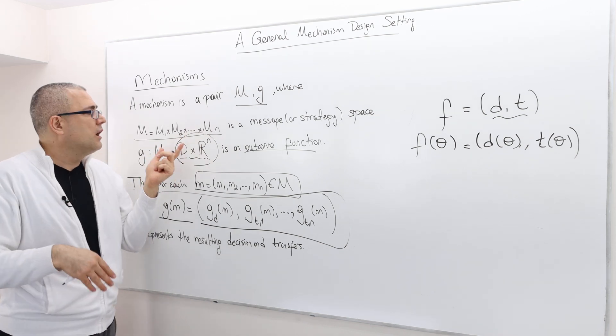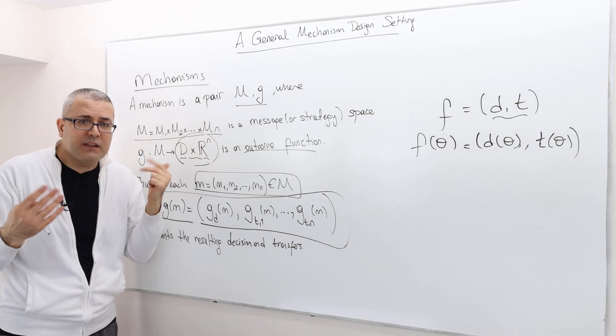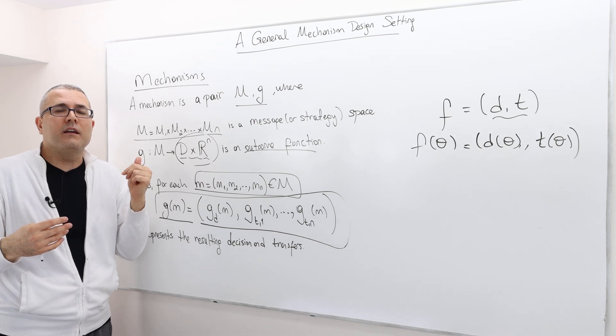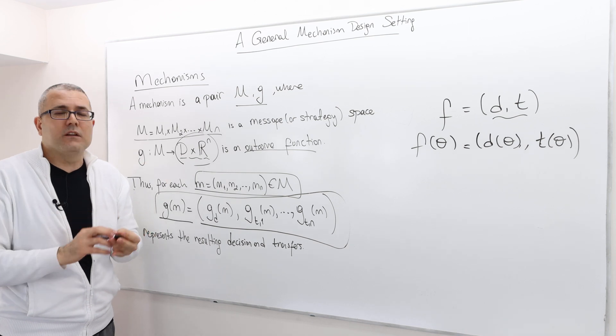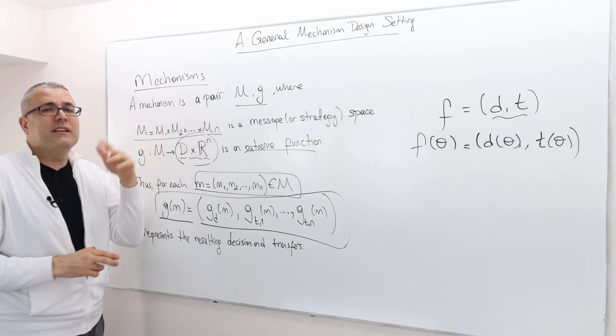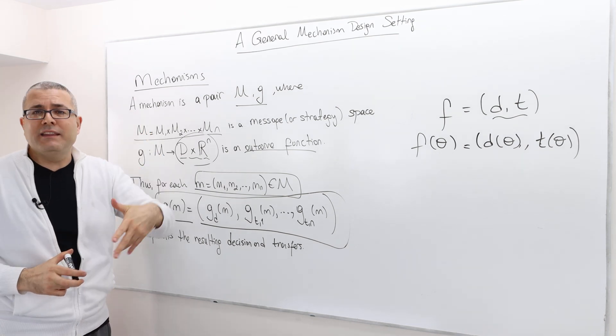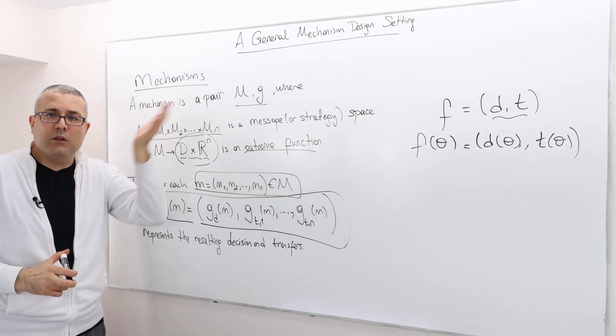Again, the message space was up and down, has nothing to do with state one and state two. Okay. The number of messages can be different than the number of private data.